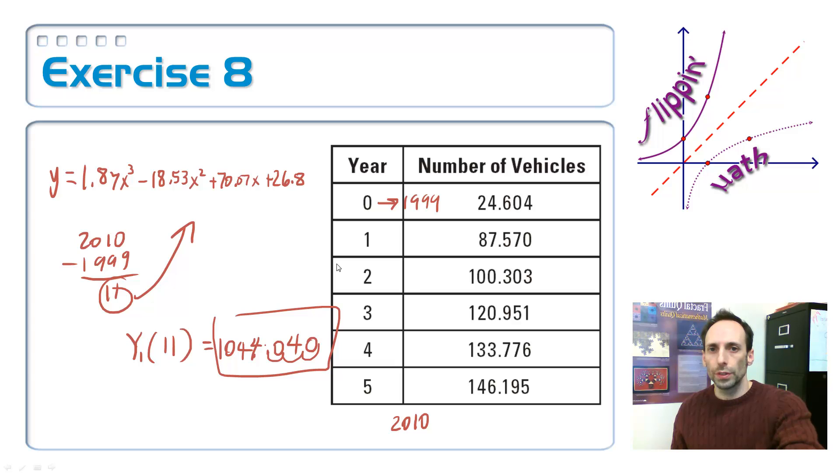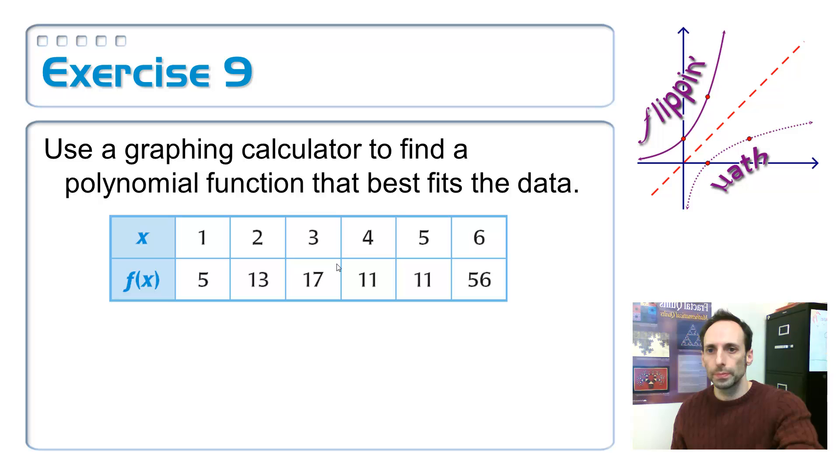So here's one for you to try all by yourself on exercise nine. Do the same steps that we did before. Put it in the graphing calculator. Find the cubic regression model that best fits that data. Okay, pause it and come see me.